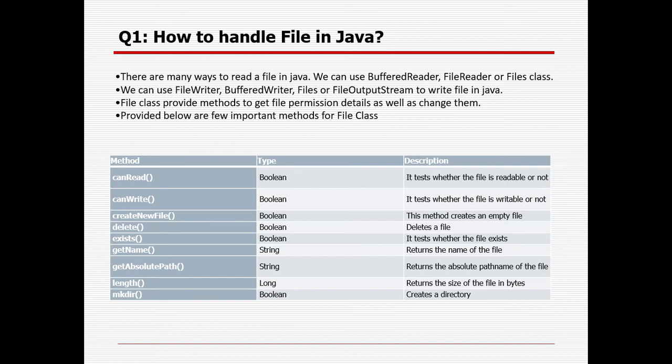Write — we can check whether we can update the data in a file or not. CreateNewFile method is used to create an empty file. Delete method can delete a file or folder. Exists method checks whether a particular file or folder exists. getName returns the name of the file. getAbsolutePath returns the absolute path. Length returns the size of the file in bytes. makeDirectory creates a new directory — that is, a folder.